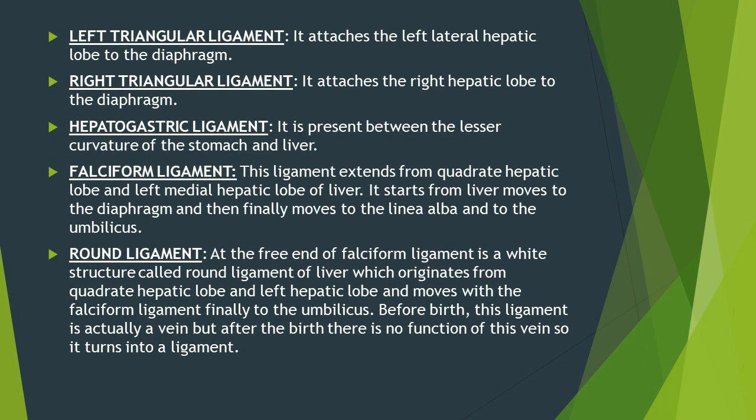The round ligament originates from the quadrate hepatic lobe and left medial hepatic lobe along with the falciform ligament, present at its free end. Before birth this round ligament is actually a vein, but after birth it has no function and therefore turns into a ligament. One important thing to note in the anatomy of the horse liver is that there is no gallbladder in the liver of the horse.